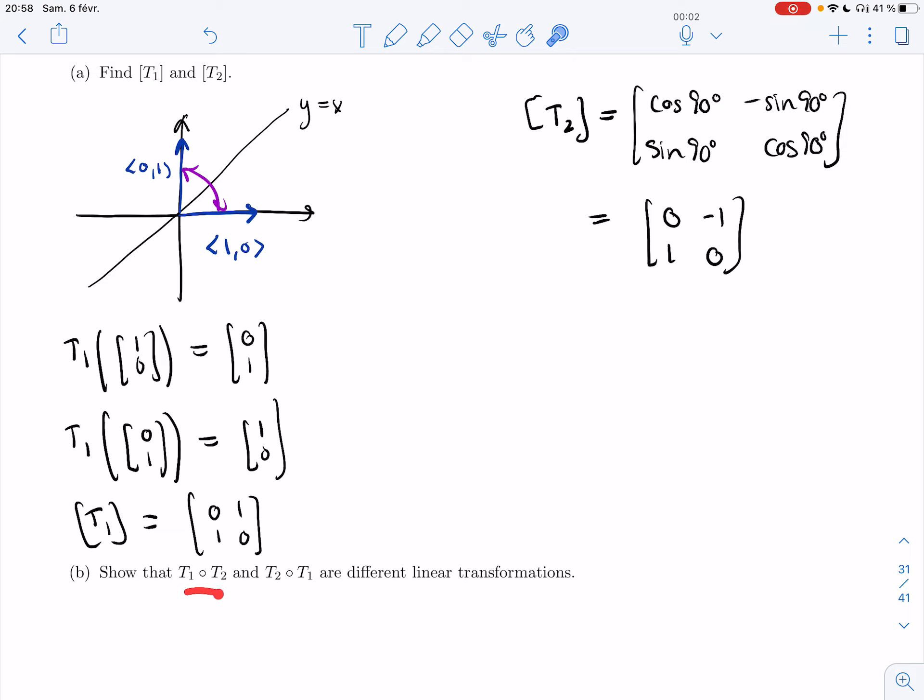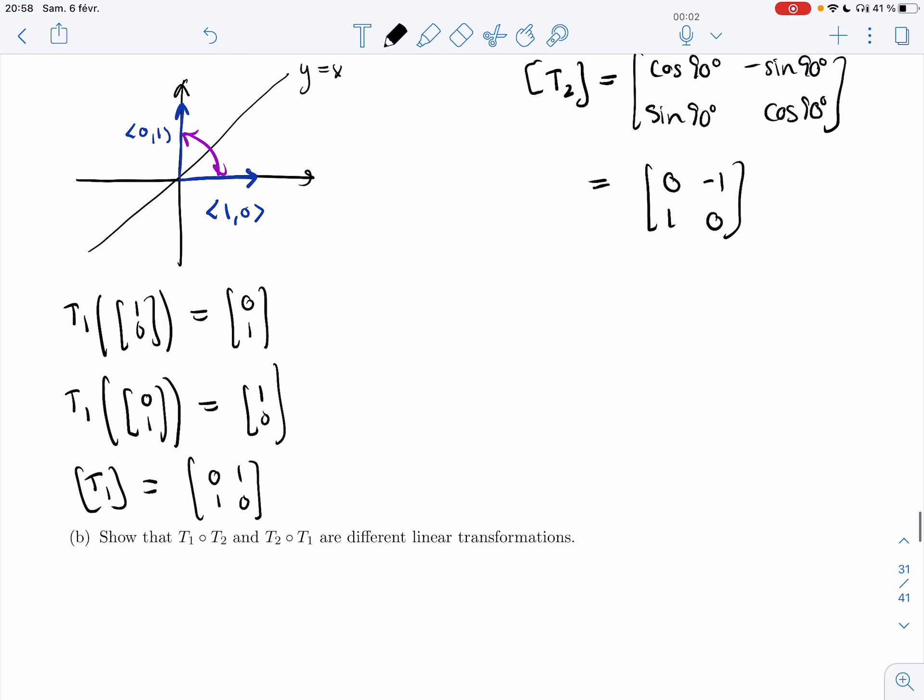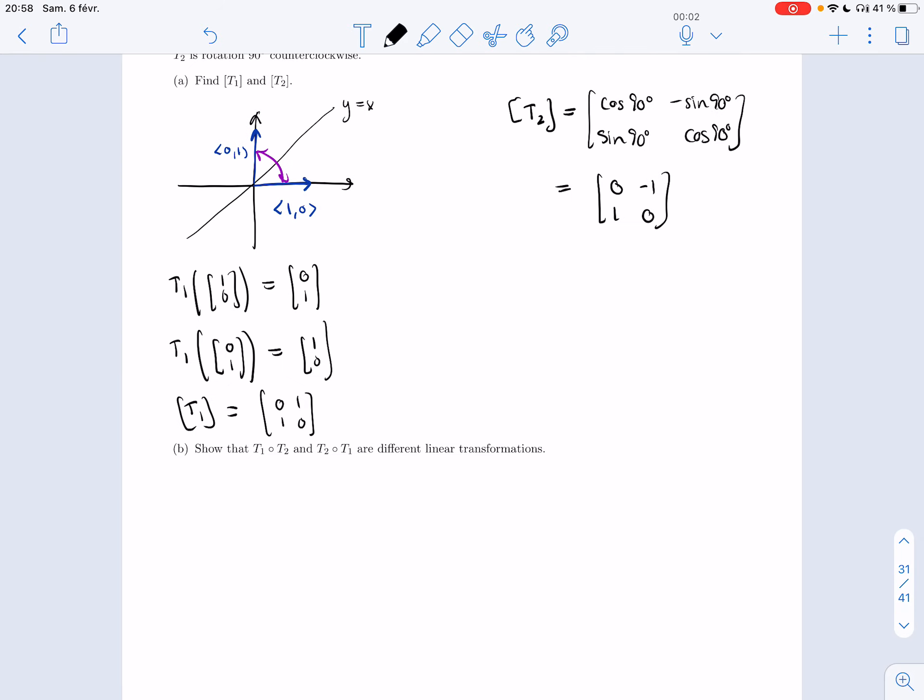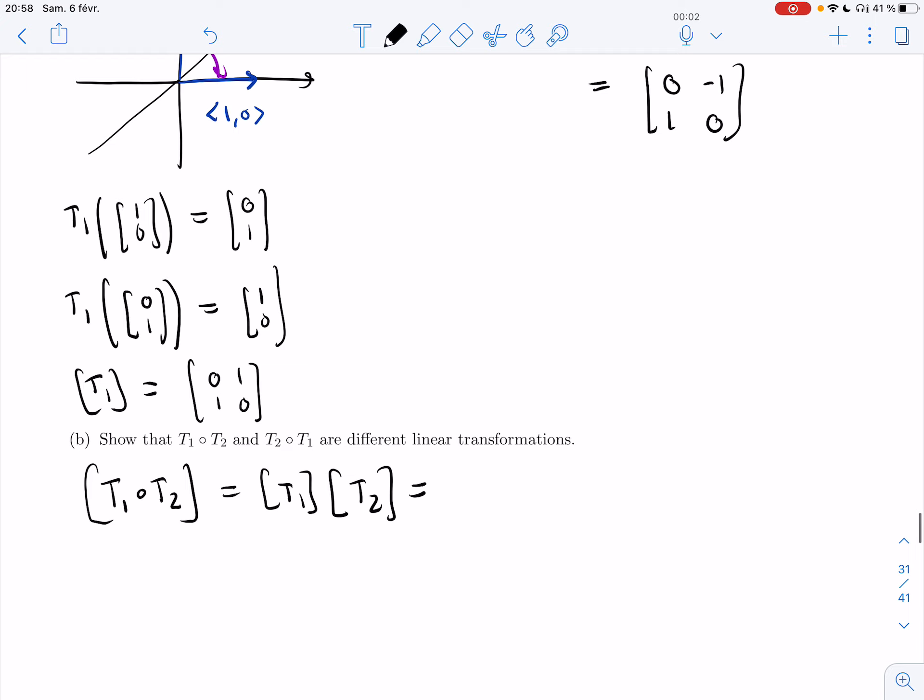Show that T1 composed with T2 and T2 composed with T1 are different linear transformations. If I take T1 composed with T2, that's going to correspond to the matrix of T1 times the matrix of T2. So [0, 1; 1, 0] times [0, -1; 1, 0]. Now all I have to do is multiply matrices, and hopefully at this point we all know how to do that. I'm getting 1, 0, 0, and minus 1.